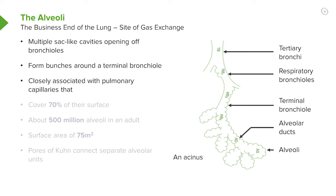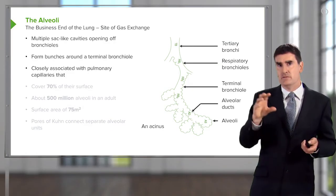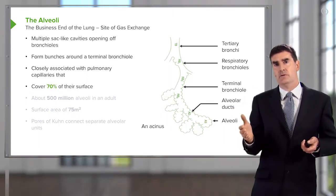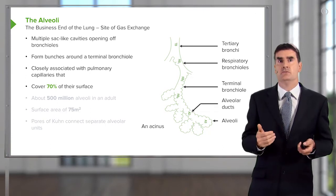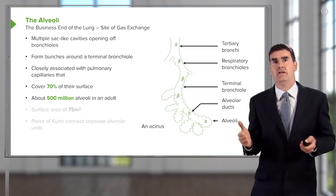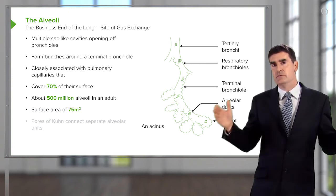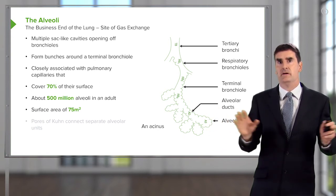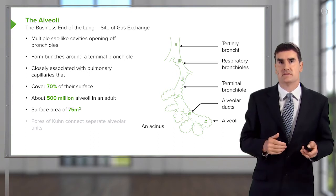The important thing about the alveoli is that they are closely opposed to pulmonary capillaries. Each alveolus will have a lot of capillary blood vessels surrounding it, and therefore oxygen can move from the alveoli into the blood vessels relatively easily. About 70% of the alveolar surface is covered by pulmonary capillaries. The numbers of alveoli are enormous — there are about 500 million in the average adult. Because of that, there is an incredible surface area of the lungs, allowing gas exchange to occur over a very large area. The average area is about 75 meters square.